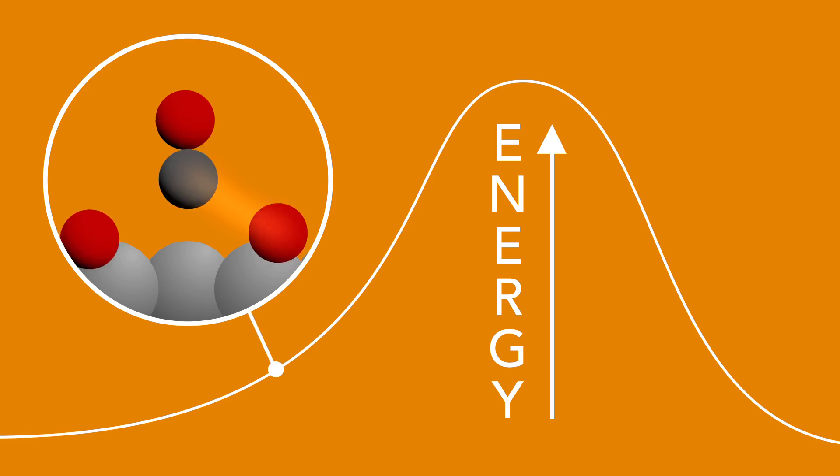The transition state is of course exactly in the middle of this, where you have now started to form a weak bond between the CO molecule and oxygen, and also weakened the bond to the substrate. It's like a compromise, a little bit between the reactants and the product.